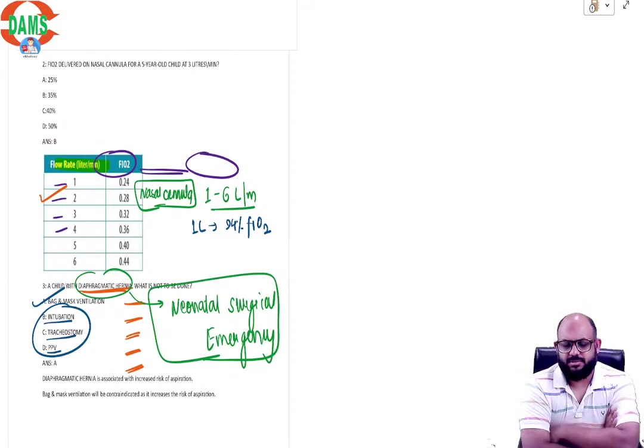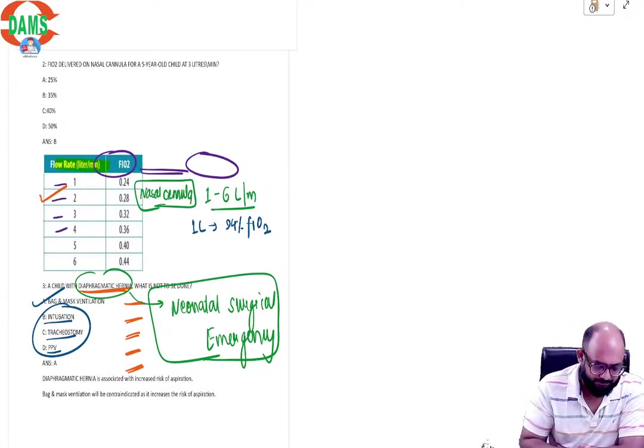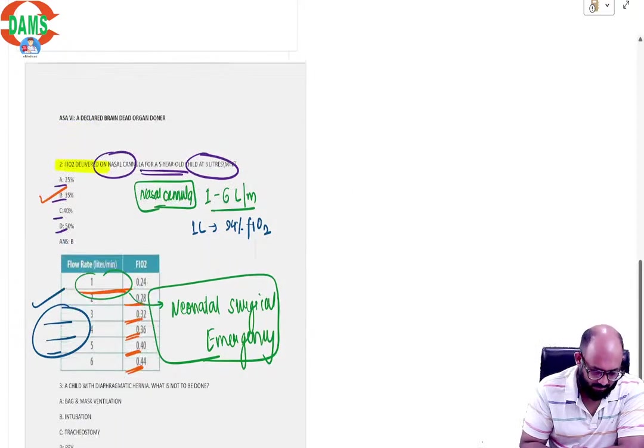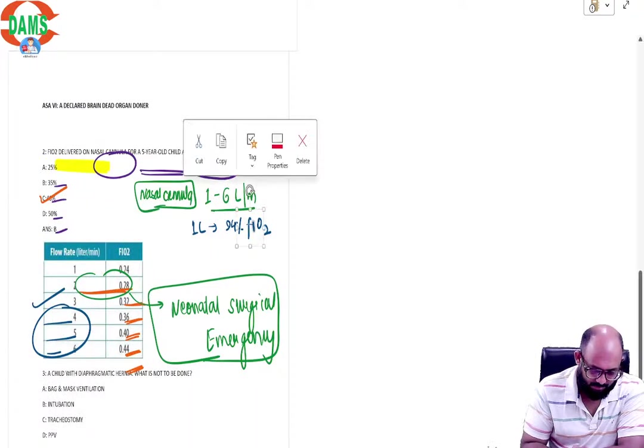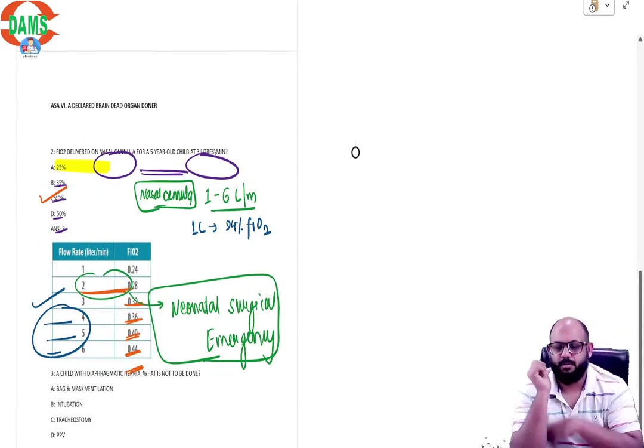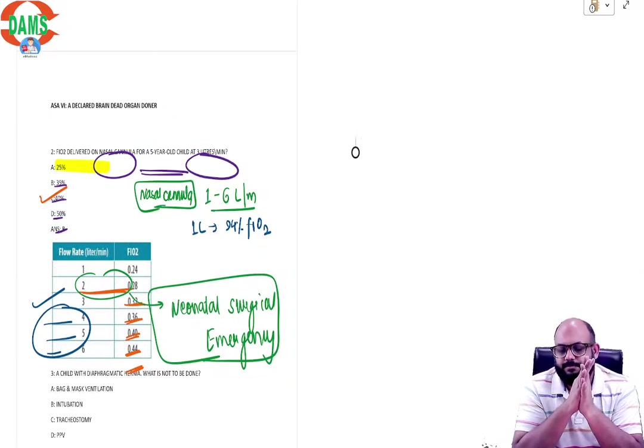So these are the three questions that were asked in anesthesia. Let's say Thomas, I accept that 32 was an option, still you will mark 35.